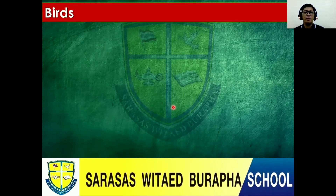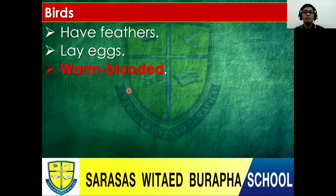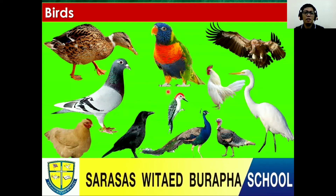Birds. What are the characteristics of birds? They have feathers, of course. They lay eggs, of course. And they are warm-blooded. Let's see some examples: a duck is considered a bird, a parrot, a vulture, a pigeon, a hen, a crow, a woodpecker, a turkey, and a cock.